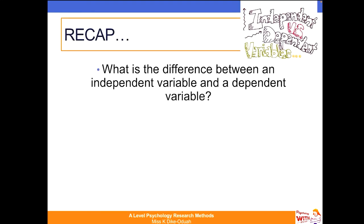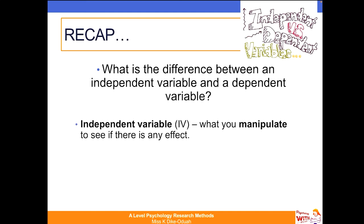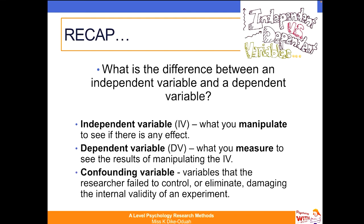Thinking back to basic research methods: what is the difference between an independent variable and a dependent variable? The independent variable is what you manipulate to see if there's any effect on the dependent variable, and the dependent variable is what you measure. In research, we also have confounding variables — variables that the researcher may fail to control or eliminate.